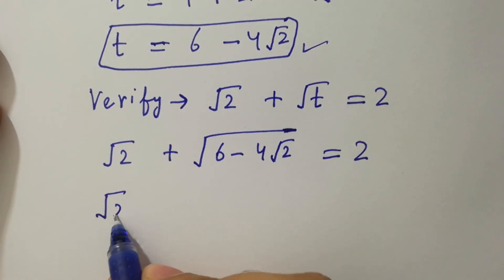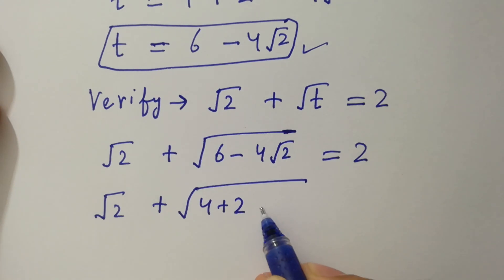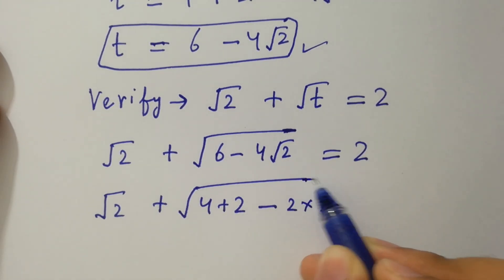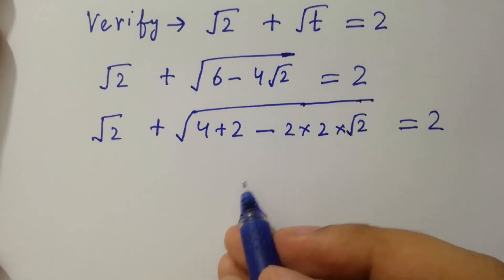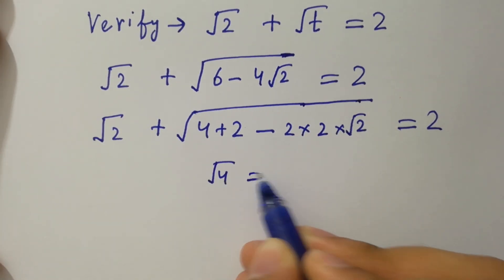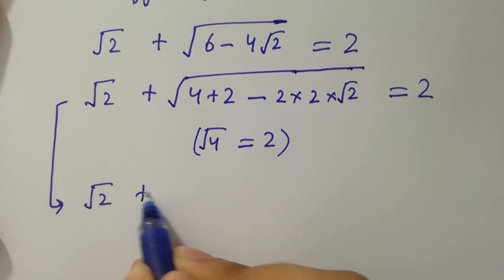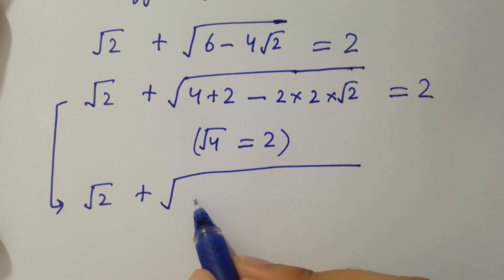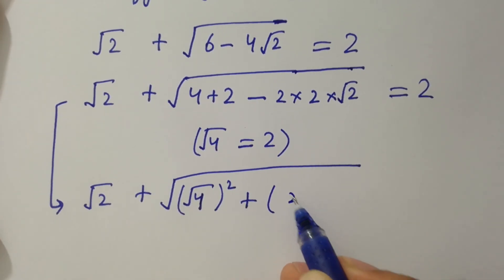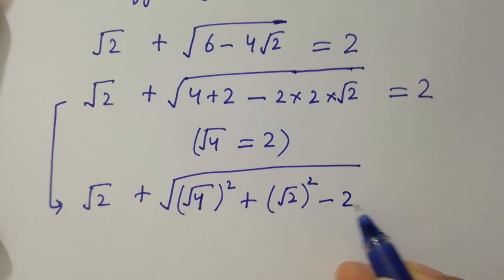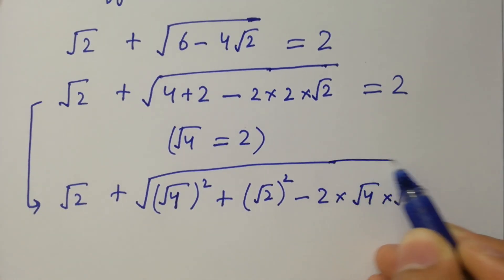Next, we have square root of t as 6 minus 4, which is 2 times 2 times square root of 2, equal to 2. Since square root of 4 equals 2, this is the same as square root of 2 plus square root of 4 squared plus square root of 2 squared minus 2 times 4 times square root of 2 equal to 2.